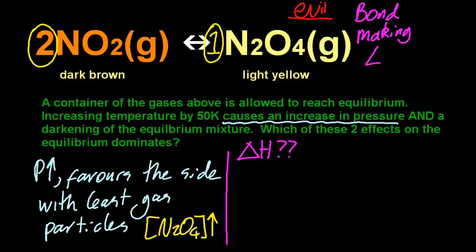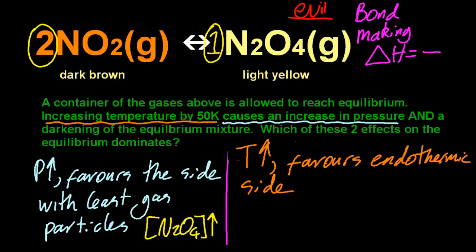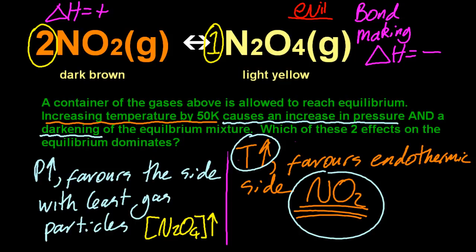You can work out ΔH because the forward reaction is bond making and bond making releases energy. ΔH is negative. So if I increase the temperature, it's going to favor the endothermic to cool itself down, which is the reverse reaction and making NO₂, the dark brown stuff. Ah, so which is the most dominant effect? It's temperature because it went dark brown. The pressure is a minor effect here.